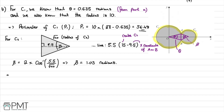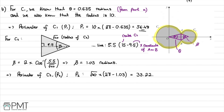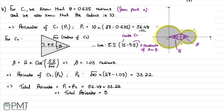For C2, the perimeter contribution P2 equals the square root of 40 multiplied by (2 pi minus 1.03), which equals 33.22. The total perimeter is P1 plus P2, which is 56.48 plus 33.22, giving a total perimeter of 89.7.